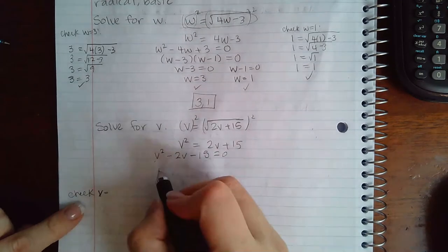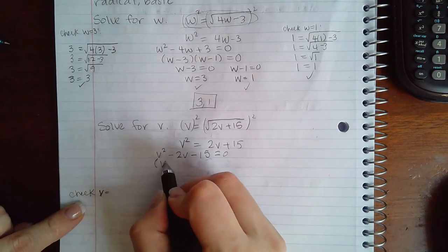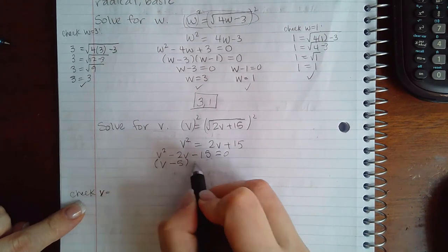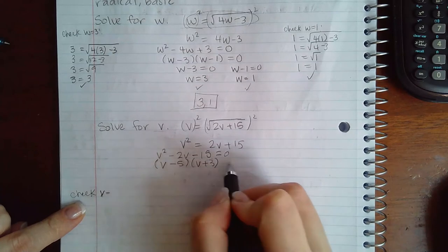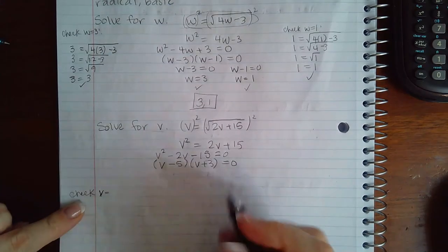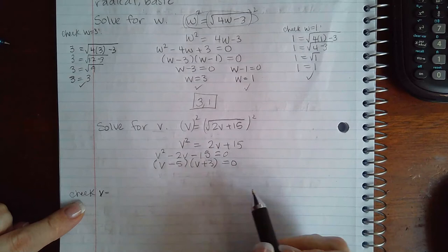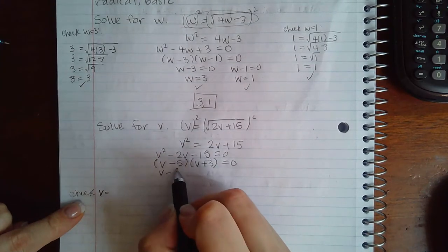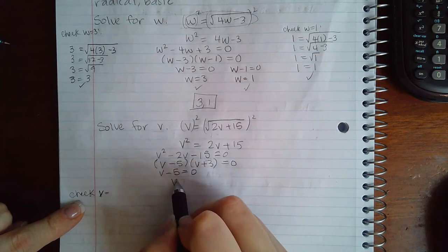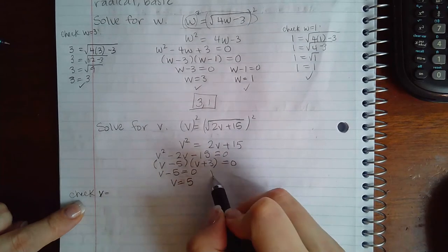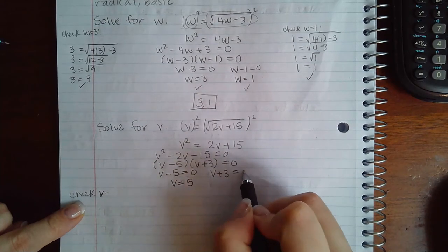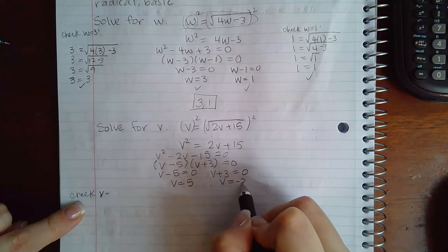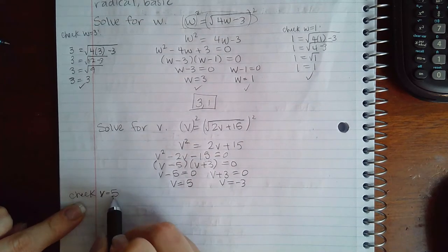Okay, so when I factor this it actually should be v minus 5 and v plus 3. There we go, now those multiply to give me negative 15 and combine to give me negative 2. So if I set this factor equal to 0 I get v equal to 5. If I set the other factor equal to 0 I get v equal to negative 3. So the first one I try is going to be 5.